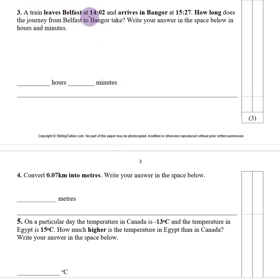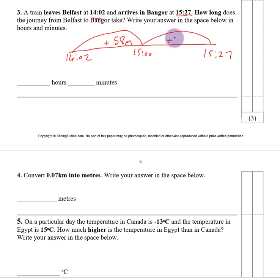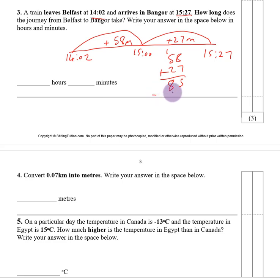Number three. A train leaves Belfast at 14:02 and arrives in Bangor at 15:27. How long does the journey take? Write your answer in hours and minutes. The start time is 14:02 and the end time is 15:27. We add on 58 minutes to get to 15:00, then add 27 minutes to arrive at Bangor. In total that is 58 add 27, which gives us 85 minutes. Taking away 60 gives us 1 hour, leaving 25 minutes. So it is 1 hour and 25 minutes.